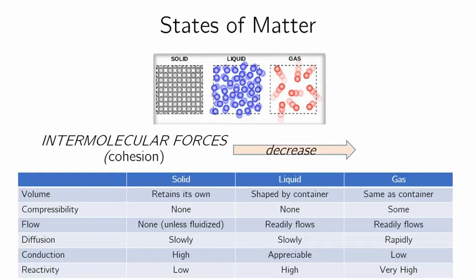As far as the properties of these three different states, some of these are quite intuitive and you probably know them. So the volume, for example, a solid retains its own shape. Meaning if you took a block of ice and you put it in a cup, it will still look like a block of ice.